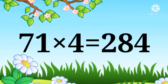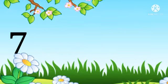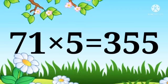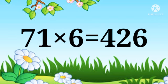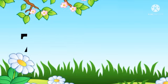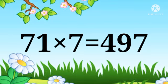71 x 4 = 284, 71 x 5 = 355, 71 x 6 = 426, 71 x 7 = 497.